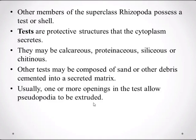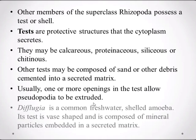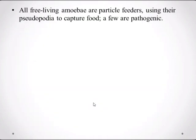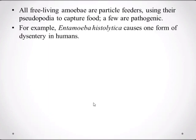Usually one or more openings in the test allow pseudopodia to be extruded. The Difflugia is a common freshwater shell amoeba; its test is waist-shaped and composed of mineral particles embedded in a saturated matrix. All free-living amoeba are particle feeders, using their pseudopodia to capture food. A few are pathogenic.